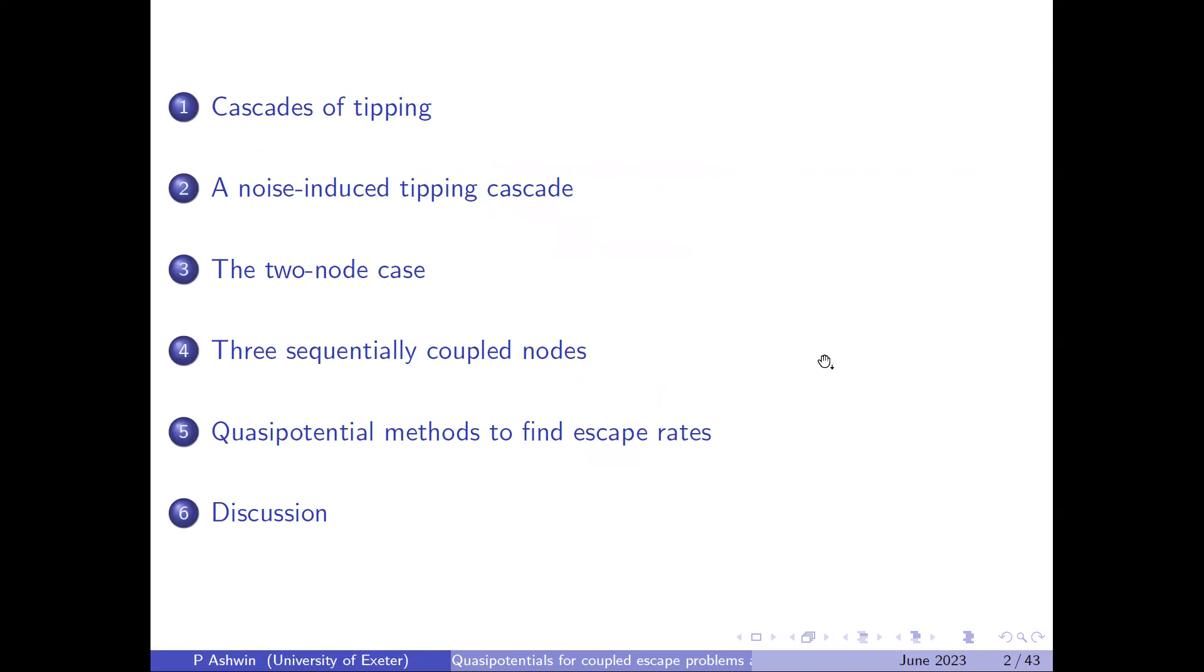I'll talk a little bit about cascading tipping and what they might be and focus really on noise-induced tipping cascades, a little bit on two-node and three-nodes, very simple models where we can actually do quite a lot in terms of understanding sequences and qualitative changes in behavior of a coupled system as you change a parameter in the weak noise limit. Maybe I'll talk a bit about three nodes as well, but I guess this is meant to be 40 minutes, or 45 minutes, so I'll try and keep the time. And then I'll talk about quasipotential methods to try and find escape rates in such systems.